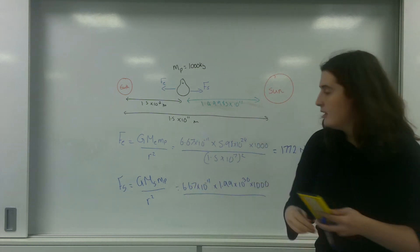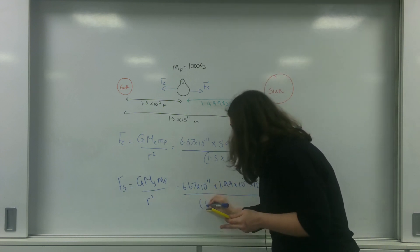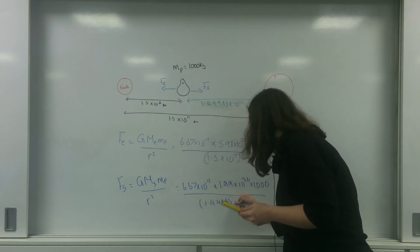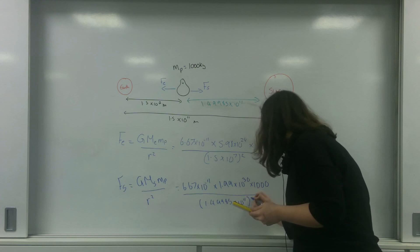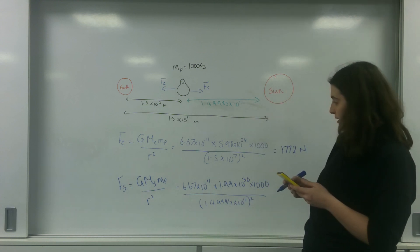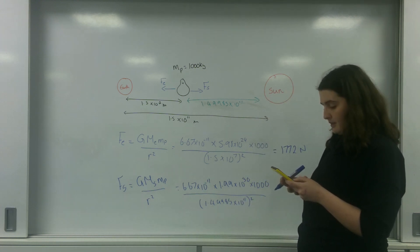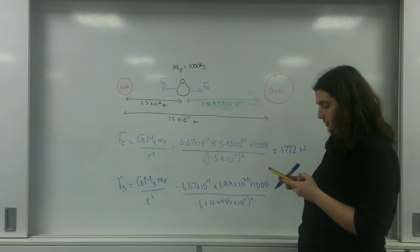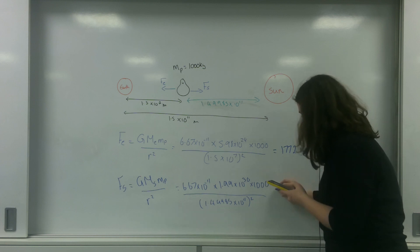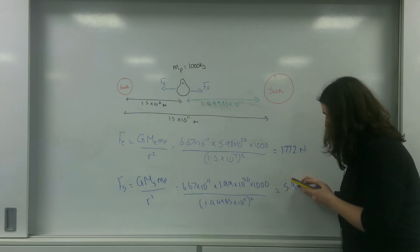So this here is going to be 1.49985 times 10 to the 11 squared. 6.67 times 10 to the minus 11 times 1.99 times 10 to the 30 times by 1,000 divided by 1.49985 times 10 to the 11 squared. That equals 5.9 newtons.